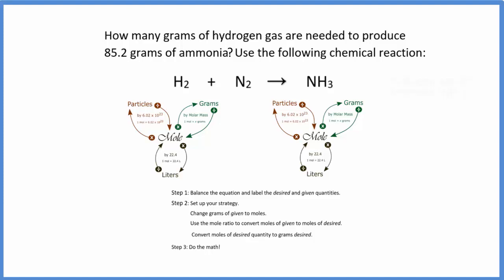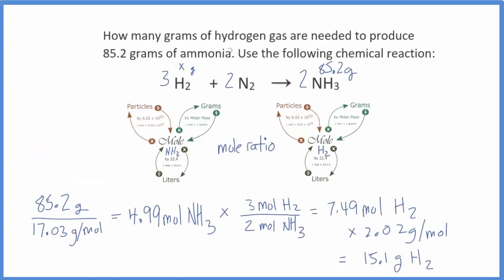Pause and solve this one. So the big difference with this problem is that we're given grams of the product, and we're asked to find some grams of the reactants. It's a little bit reversed, but just remember, we're given these grams, so that's what we're going to start out with.